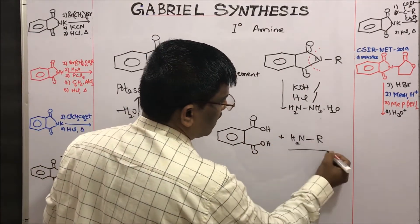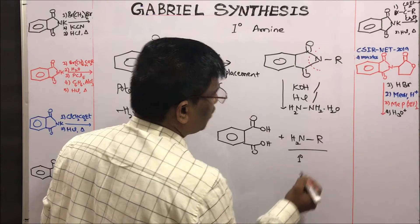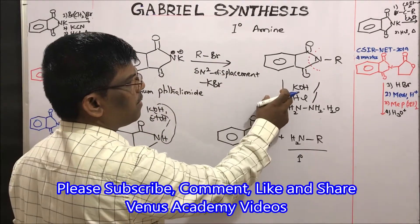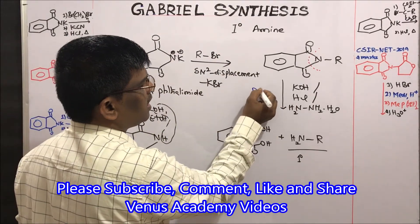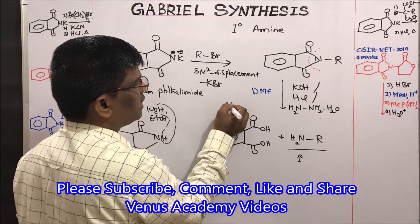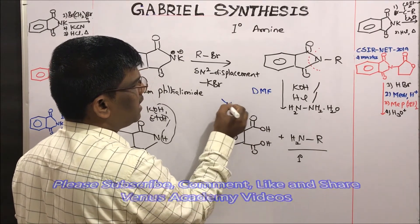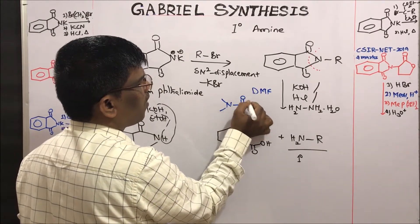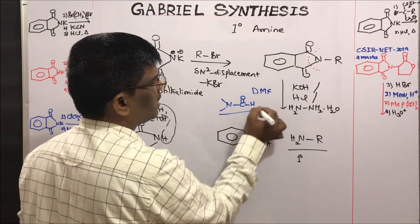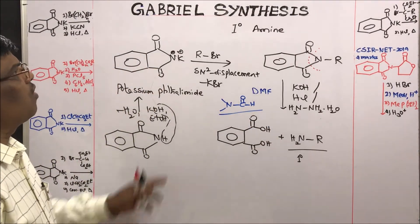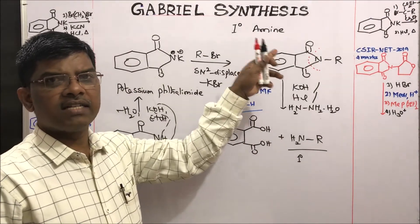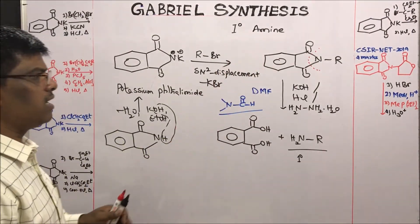The N-alkylated phthalimide can be hydrolyzed simply using KOH (base), acid, or hydrazine hydrate to give free amine — that is, primary amine. In this step, the usual solvent is DMF, dimethylformamide. This is how Gabriel synthesis gives primary amines. Let us now see the mechanism.